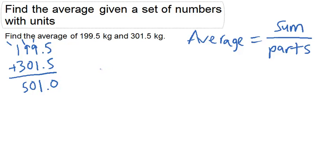Because there are only two numbers, there are only two parts. So we divide 501 by 2 in order to figure out the average.